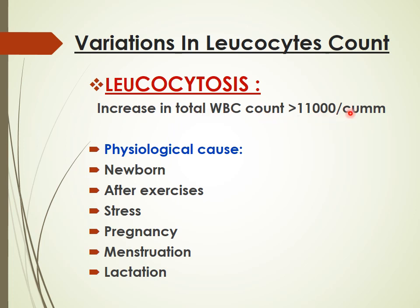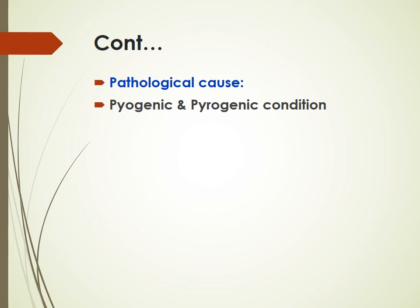Variation in leukocyte counts: if the total WBC count is increased to more than 11,000 per cubic millimeter of blood, it is known as leukocytosis. The physiological causes of leukocytosis are newborn, after exercise, stress, pregnancy, menstruation, and lactation. The pathological causes are pyogenic and pyrogenic conditions.